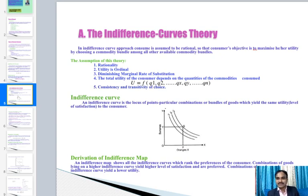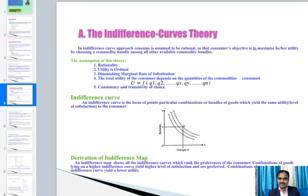Total utility of the consumer depends on the quantity of commodities consumed: U = f(q1, q2, ..., qn). The last assumption is consistency and transitivity of choices. Consistency means if the consumer chooses bundle A over B in one period, they will not choose B over A in any other period when both are available. Symbolically: if A > B, then B is not greater than A.